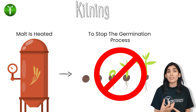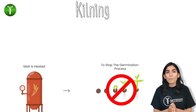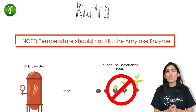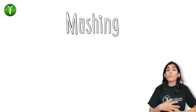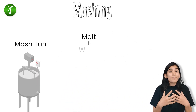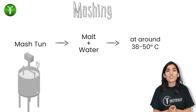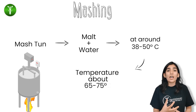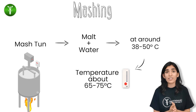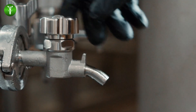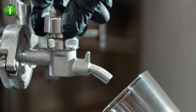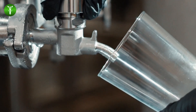After the germination process, kilning takes place, where the malt is heated to stop the germination process and for drying. The temperature, however, should not kill the amylase enzyme. After kilning, mashing takes place, where malt is mixed with water at around 38 to 50 degrees Celsius and the mixture is heated to a temperature of about 65 to 75 degrees Celsius.